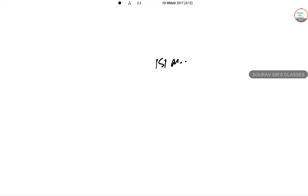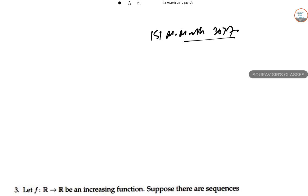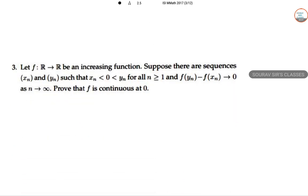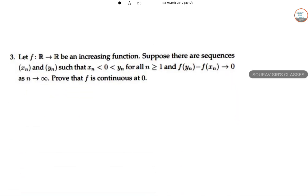Today we are solving ISIM Maths Objective 2017, question number 3. They have given a function f: R → R which is increasing, and there are sequences (xn) and (yn) such that xn < 0 < yn for all n ≥ 1, and f(yn) - f(xn) → 0 as n → ∞. We need to prove that f is continuous at 0.